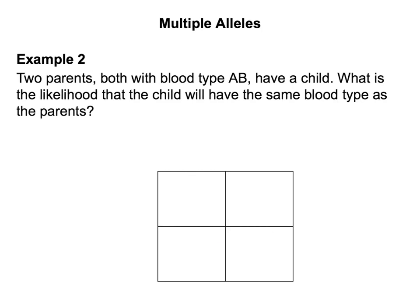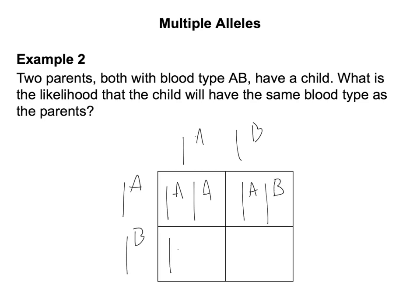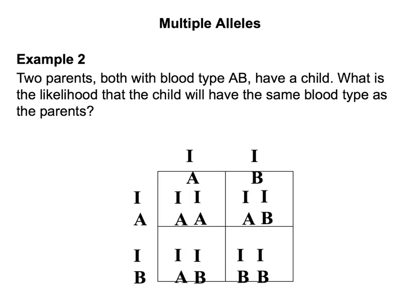Multiple alleles and blood type are definitely tricky, so let's do another example. Two parents both with blood type AB have a child — what is the likelihood their child will have the same blood type as the parents? Both parents are IA IB. Crossing IA IB × IA IB gives: IA IA (type A), IA IB (type AB), IA IB (type AB), and IB IB (type B). There's a 50% chance a child from these parents would have blood type AB, the same as the parents.